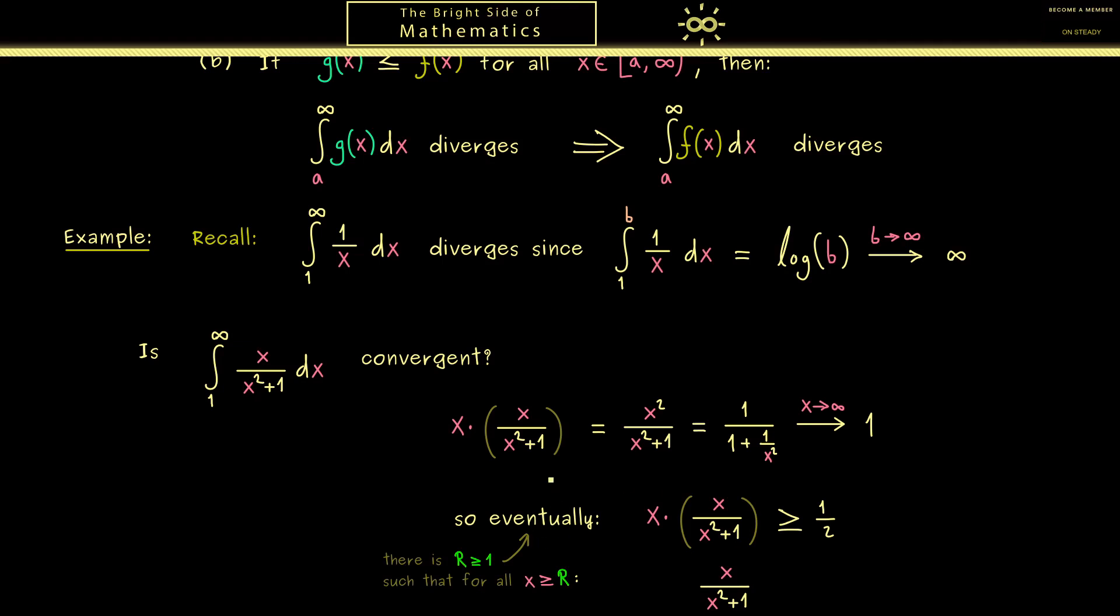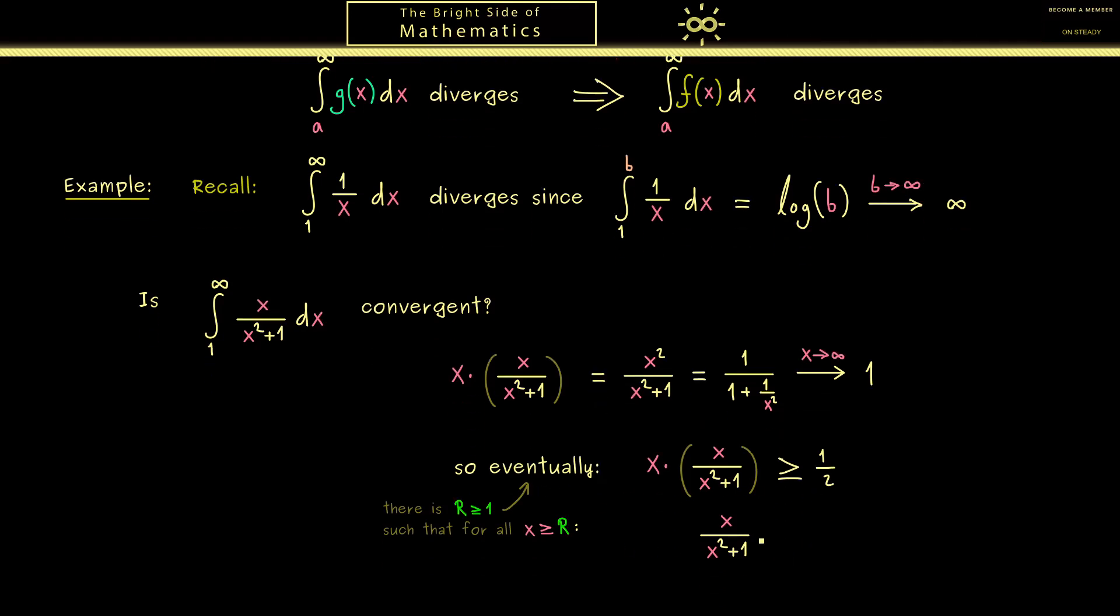Okay, and then we can reformulate the inner quantity and find that our function here is always greater or equal than 1 half times 1 over x. And there we already know the function on the right-hand side with the integral will give us divergence. In other words, we can apply the theorem from above where the upper limit here is capital R.